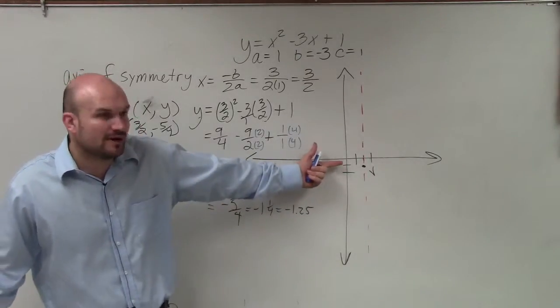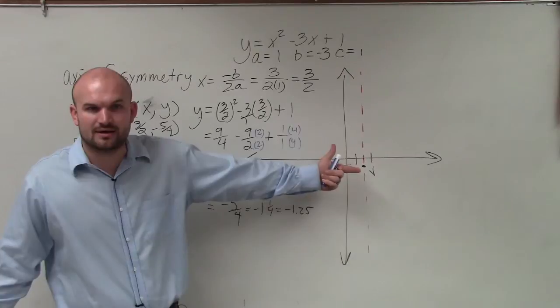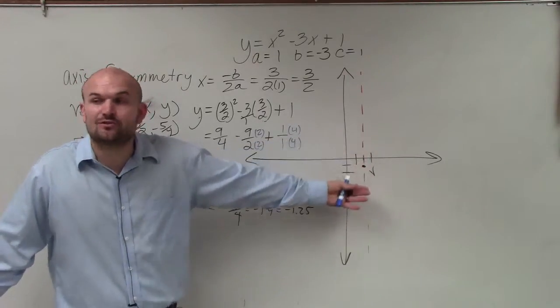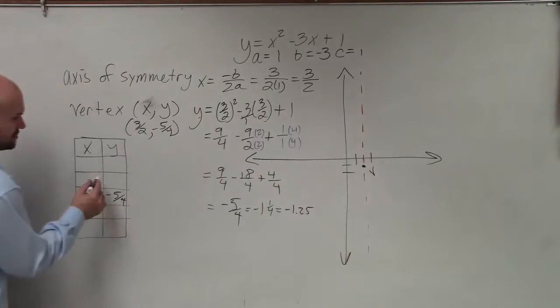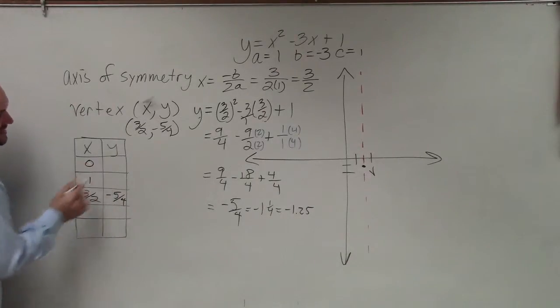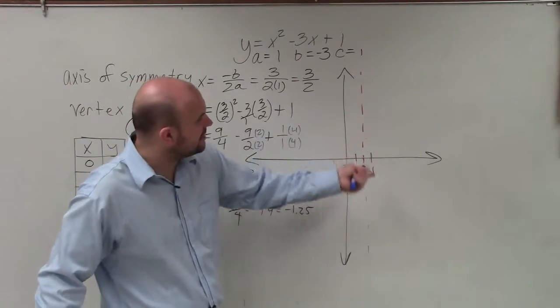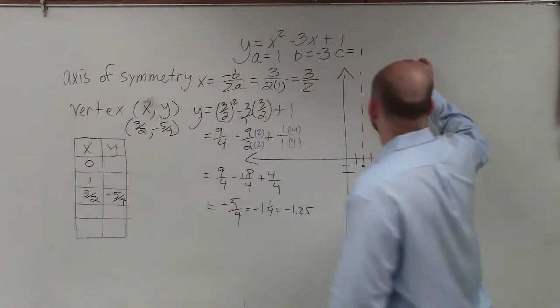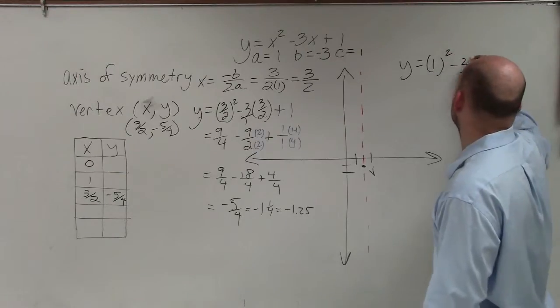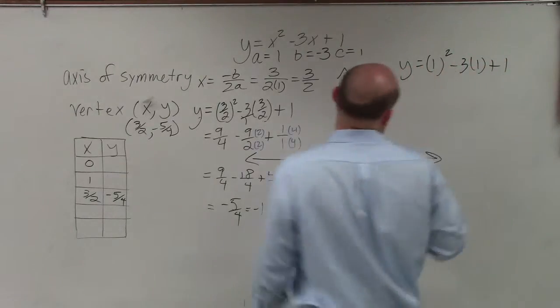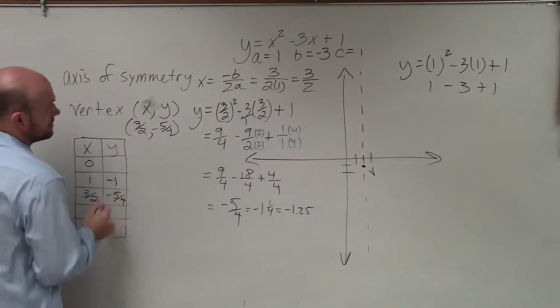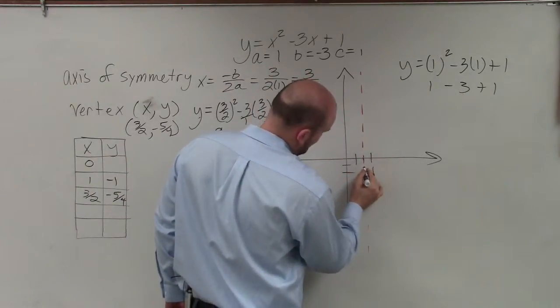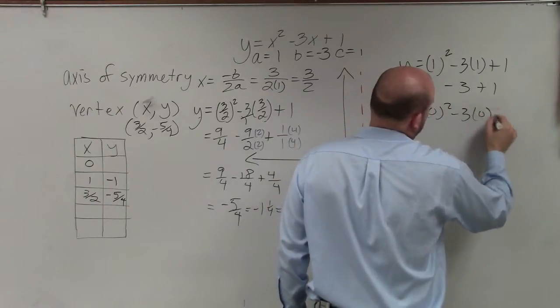So should I choose, based on what I went over last class period, would you want to choose points to the left or to the right? To the right. You can choose to the right. There's nothing wrong if you said right. I would choose to the left because I want to get them closer to 0. So I would choose the points positive 1 and 0. All right? And so now, let's go ahead and see what those points would be. So now, all I simply do is I plug in those points. 1 squared is 1 minus 3 plus 1, so that's negative 1, right? And then let's do 0. y equals 0 squared minus 3 times 0 plus 1.